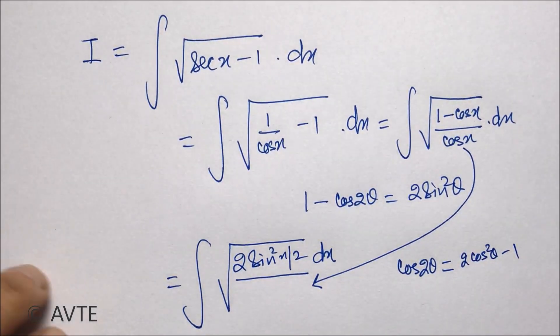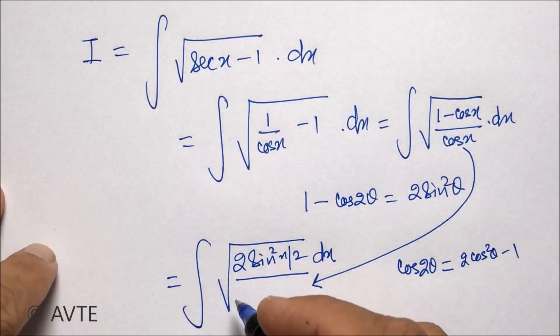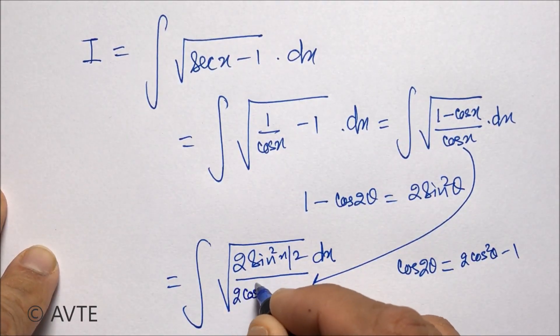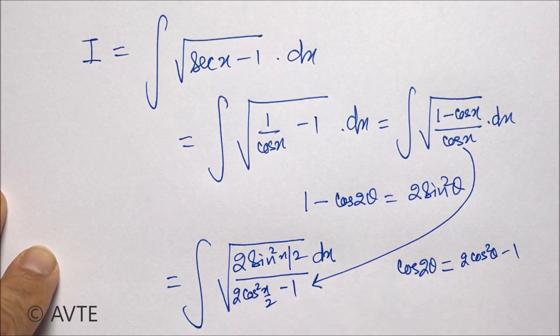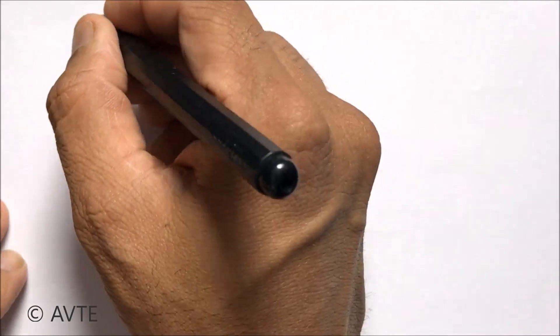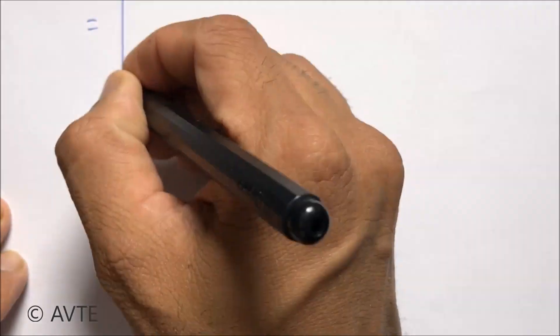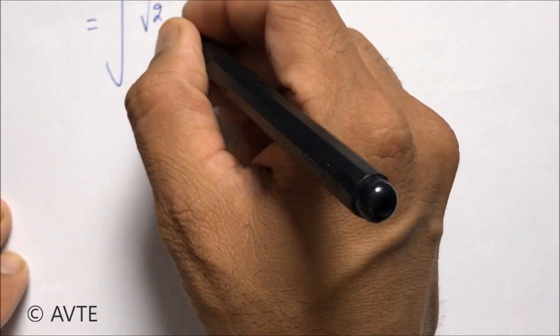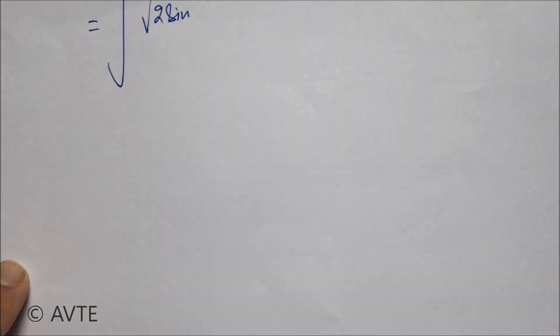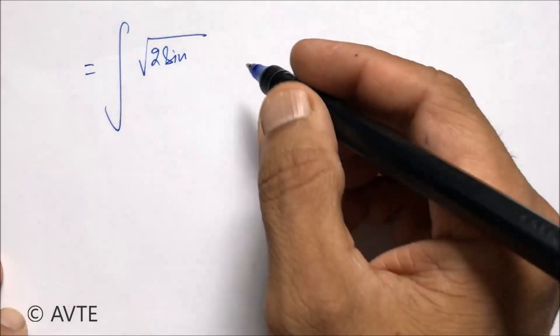We apply cos 2θ = 2cos²θ − 1, which gives us 2cos²(x/2) − 1 in the denominator. With this substitution, the question now takes a new simplified form.